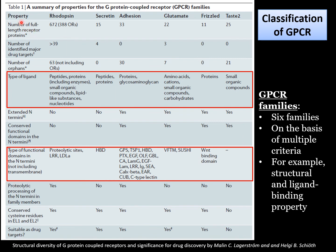A table summarizes the properties used for classifying GPCRs into six major families: Rhodopsin, Secretin, Adhesion, Glutamate, Frizzled, and Taste 2. The number of full-length receptor proteins is highest in the Rhodopsin family, which also has the highest number of identified major drug targets and orphan drugs. Orphan drugs are named so because they are intended to treat diseases so rare that pharmaceutical companies are reluctant to develop them under usual marketing conditions. The nature of the ligand differs across families — Rhodopsin binds peptides, proteins, small organic compounds, lipid-like substances, and nucleotides; Secretin binds mostly peptides and proteins.